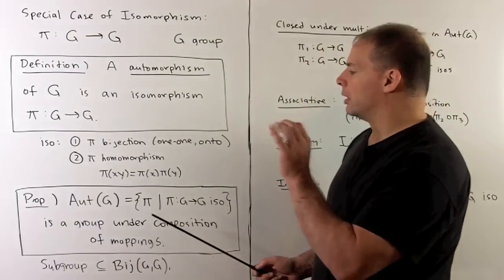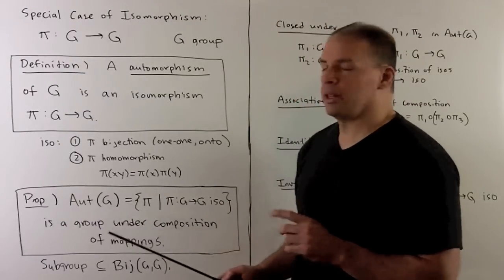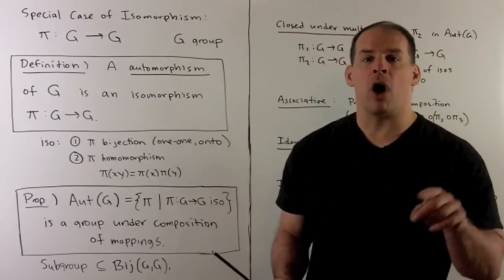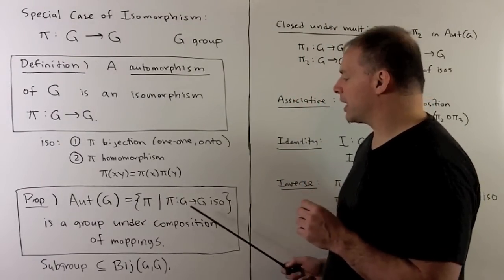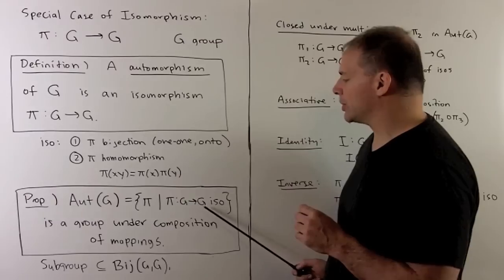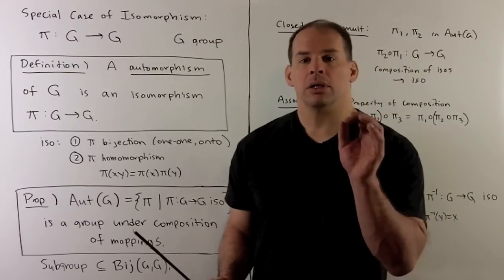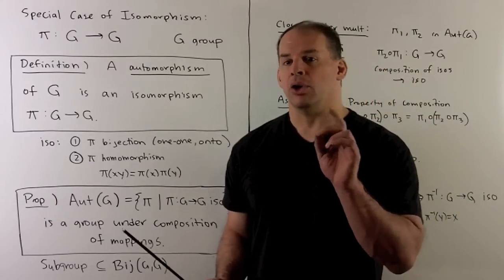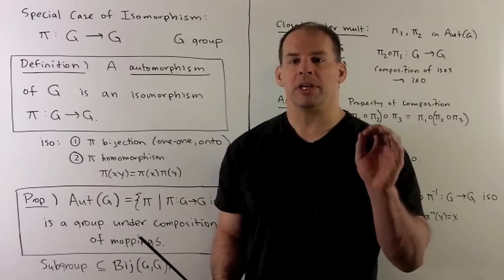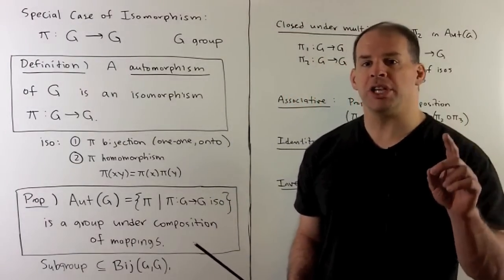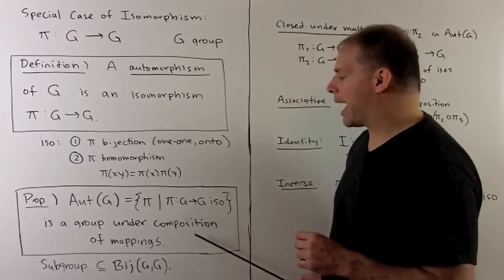Now, another definition: we'll call Aut(G) the set of all automorphisms of G — all isomorphisms that carry G back to itself. To get a new group from an old group, we can consider Aut(G). Aut(G) is a group under composition of mappings.